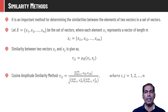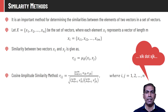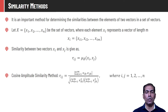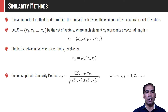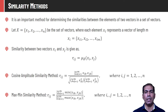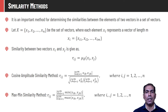Using the cosine amplitude similarity measure, the similarity between vectors x_i and x_j is: r_ij = (Σ_{k=1}^{m} x_ik · x_jk) / √[(Σ_{k=1}^{m} x_ik²)(Σ_{k=1}^{m} x_jk²)]. The numerator finds element-wise multiplication and the denominator takes the squared sums and multiplies them under the square root. The max-mean similarity method computes similarity between x_i and x_j as (Σ_{k=1}^{m} min(x_ik, x_jk)) / (Σ_{k=1}^{m} max(x_ik, x_jk)).